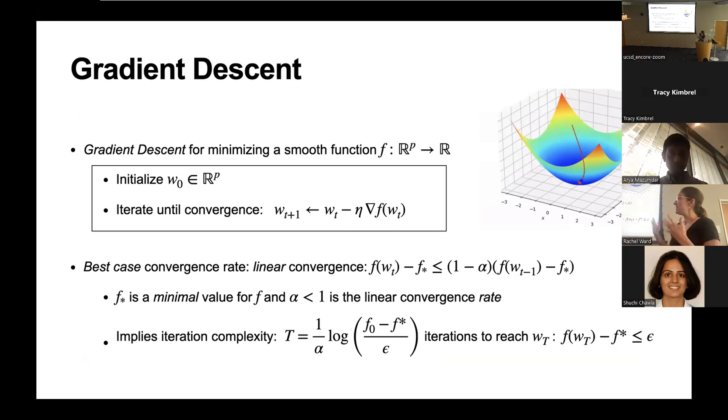The best case scenario is that you implement gradient descent and you get a linear convergence rate, where the error between the value of the loss function at the current iterate and an optimal value decreases by a factor of 1 minus alpha at every iteration. An important implication of a linear convergence rate is that the number of iterations t of gradient descent, which is proportional to 1 over alpha times log 1 over epsilon, is sufficient to guarantee that you'll reach an epsilon optimal value after t iterations.